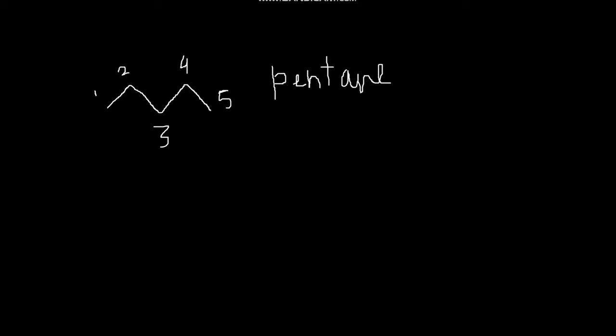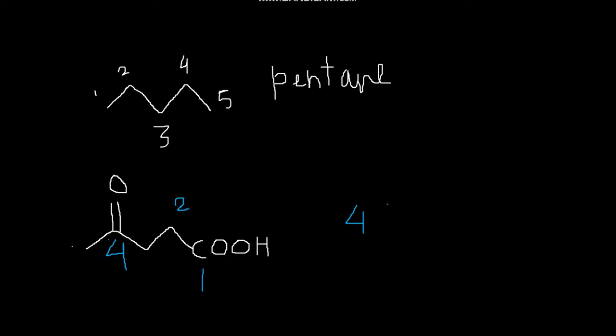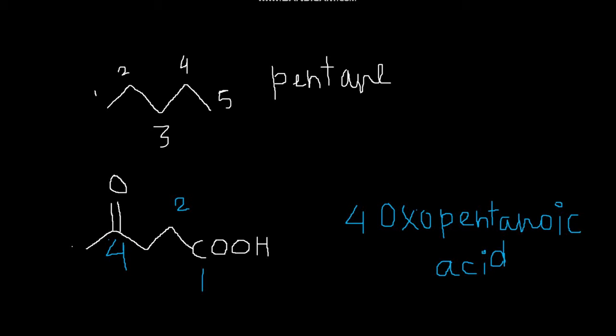Now I'm going to an acyclic compound with a functional group. Here, two functional groups are present. We have to know which functional group gets priority — we give priority to the acid group, so that is position 1. Counting 1, 2, 3, 4, and 5 carbons, the 4th carbon has an oxo group. So the name will be 4-oxopentanoic acid. For how to name this type of compound, see my previous video.